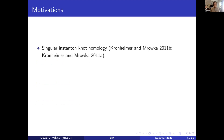First I'll motivate this construction. The point of origin here is the singular instanton knot homology developed by Kronheimer and Mrovka back in 2011. This is a gauge theoretic Floer homology invariant of knots and links in three-manifolds. On the face of it, nothing immediately to do with symplectic geometry and symplectic topology, but by the Atiyah-Floer conjecture, there's this connection between gauge theoretic invariants and so-called Lagrangian Floer homology invariants, which are really kind of symplectic in their nature.